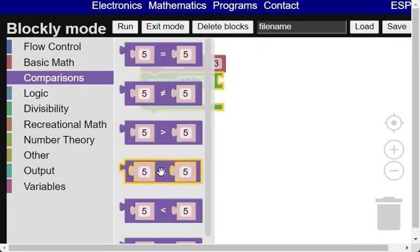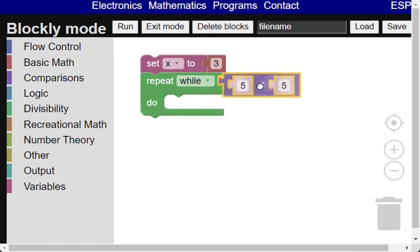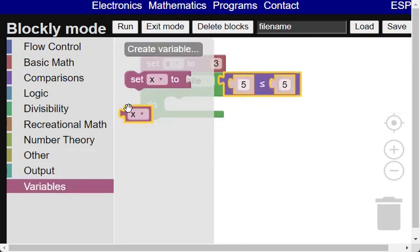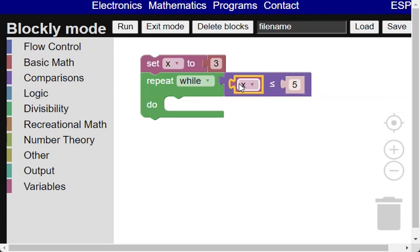So we will need the comparison block. Then we drag the get variable block to overwrite the left operator of the comparison block, and then we change the right operator to 1000.